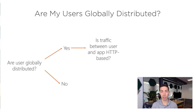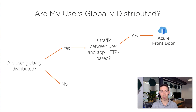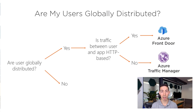If the answer is yes, then we have to ask ourselves another question: is traffic between users and applications HTTP-based? For instance, is a user using your application as a website through a web browser, which is HTTP-based? Or is this a completely different application that might use UDP or something as a transport protocol? If it is HTTP-based, then you would choose Azure Front Door to speed up your application, because this service works based on HTTP and lives at the edge of Azure, very close to your users. If you're not using HTTP, then you can use Azure Traffic Manager.